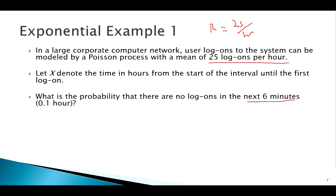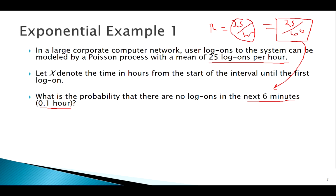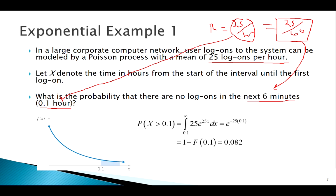We have to make sure our random variable X matches the units of lambda. We can do this one of two ways: adjust X to lambda, so six minutes translates to 0.1 hours, or convert lambda to minutes as 25/60. Either way works. Let's draw a picture using x = 0.1, then integrate the PDF with lambda = 25.